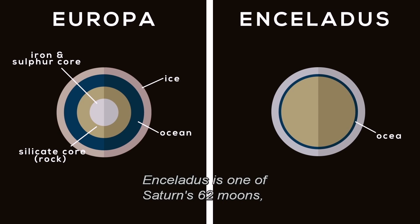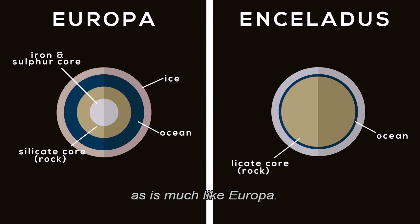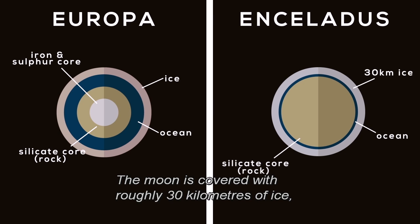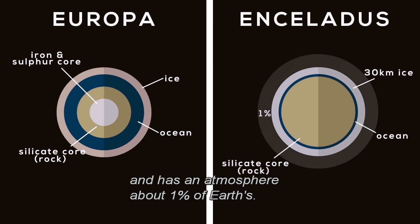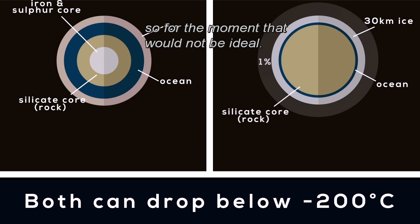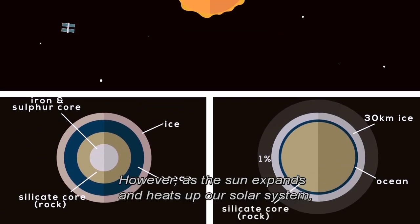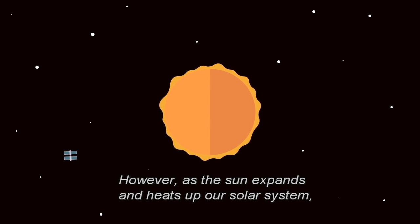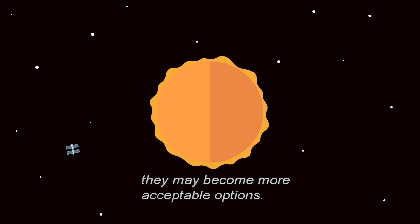Enceladus is one of Saturn's 62 moons and is much like Europa. The moon is covered with roughly 30 kilometres of ice and has an atmosphere of about 1% of Earth's. Both moons can drop to below negative 200 degrees, so for the moment they would not be ideal. However, as the sun expands and heats up our solar system, they may become more acceptable options.